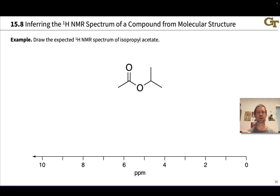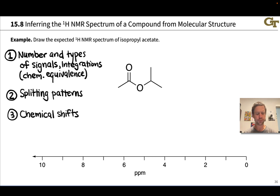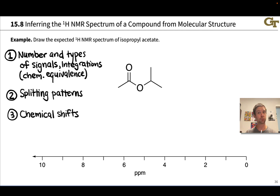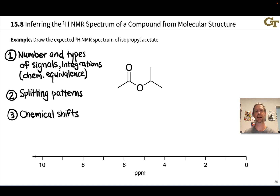Here we're given the structure of isopropyl acetate and asked to predict the NMR spectrum. The easiest way to go about this is, first, identify the numbers and types of signals and their integrations, thinking about chemical equivalence of the different types of protons. Then we'll dig into multiplicity and coupling, thinking about the splitting pattern associated with each signal. And then in stage three, we'll think about chemical shifts — this is where having a correlation chart in hand is going to come in handy.